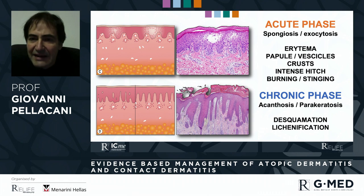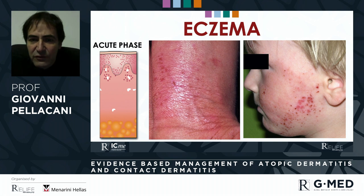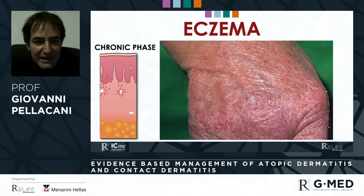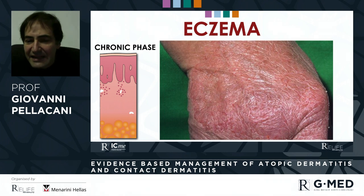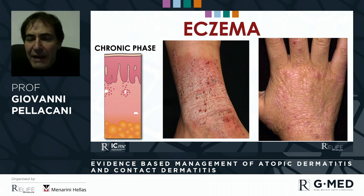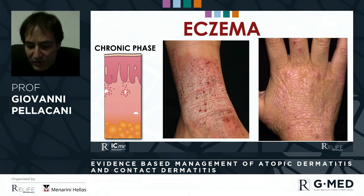This is very important to keep in mind because it generates different disease manifestations. For example, acute eczema is characterized by vesicles, crusting, and erythema with a lot of redness, whereas chronic eczema is mostly characterized by thickening of the skin, desquamation, or as in this case, lichenification. They appear to be almost two different diseases, just connected by their origin.